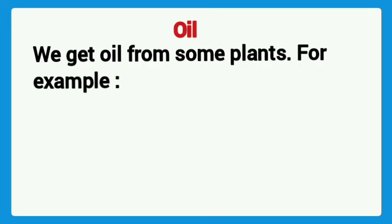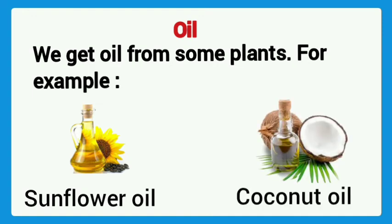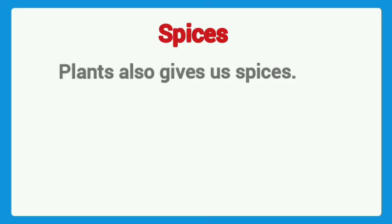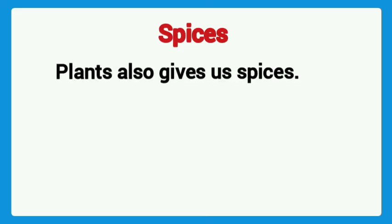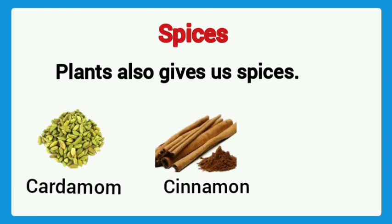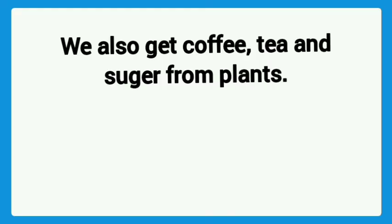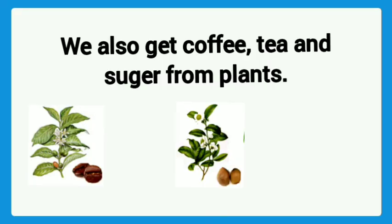Oil. We get oil from some plants. For example sunflower oil and coconut oil. Spices. Plants also give us spices, like cardamom, cinnamon, pepper. We also get coffee, tea and sugar from plants.